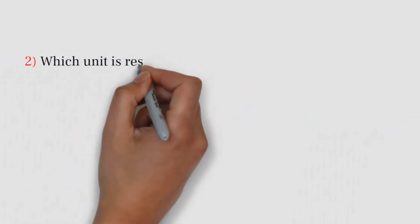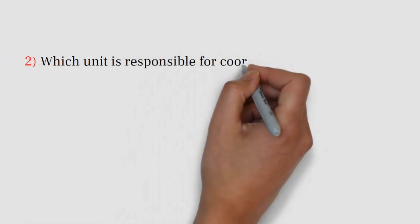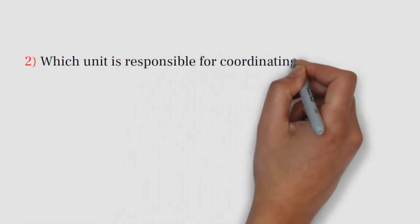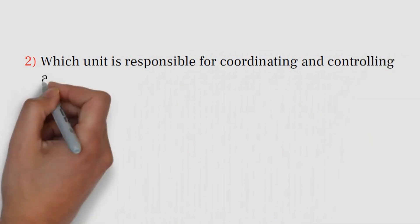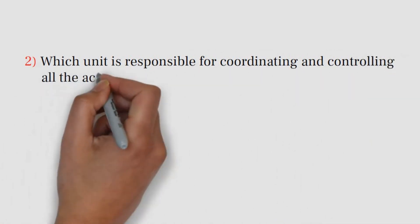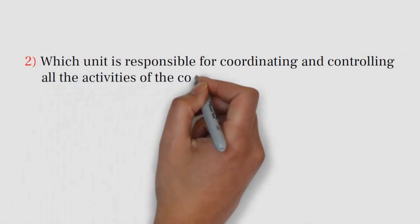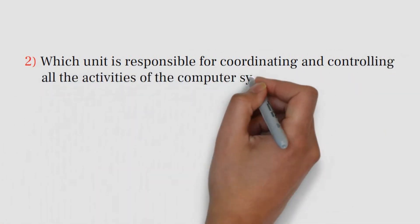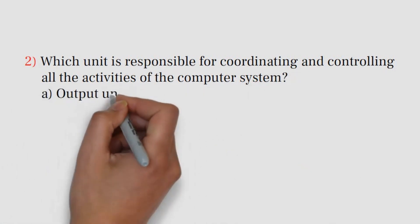Question number 2. Which unit is responsible for coordinating and controlling all the activities of the computer system? A. Output unit. B. Control unit.